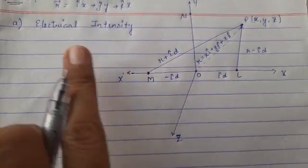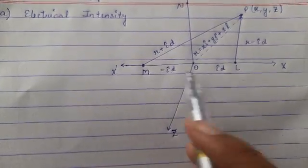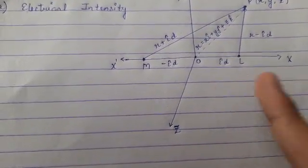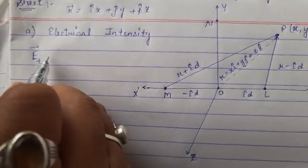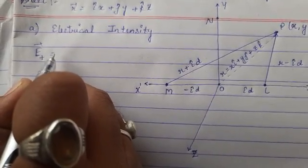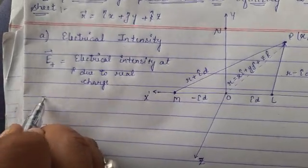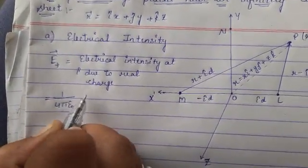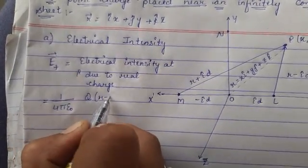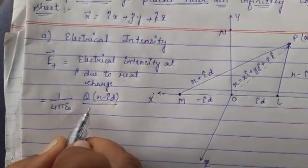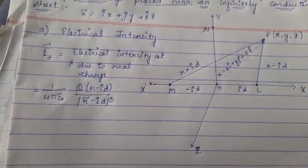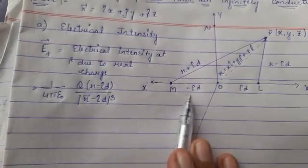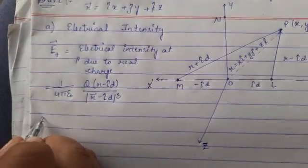We denote the electric field intensity and divide it into two portions — a positive side and a negative side. For the positive side, E-vector at P due to the real charge is equal to 1 over 4π ε₀, total charge q on the sheet, along the i-component divided by the magnitude of the distance — that is, r minus i-cap·d.